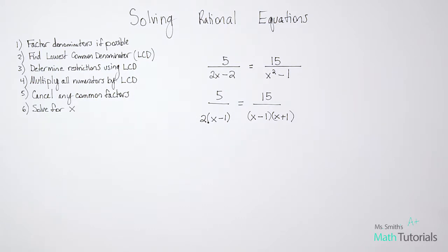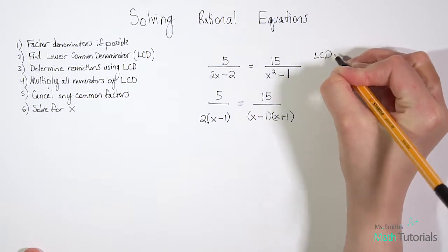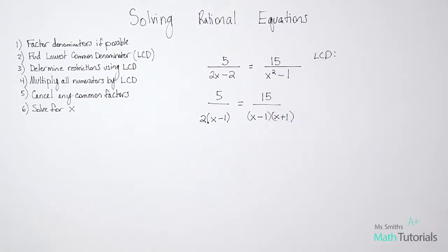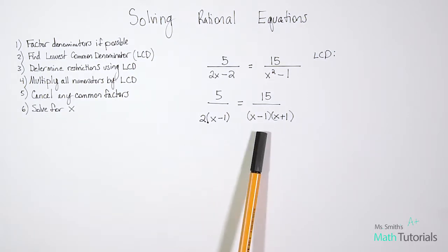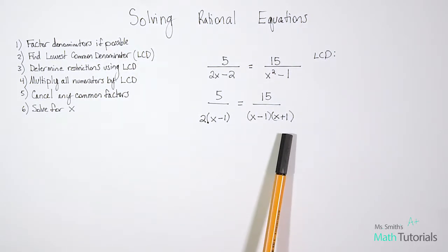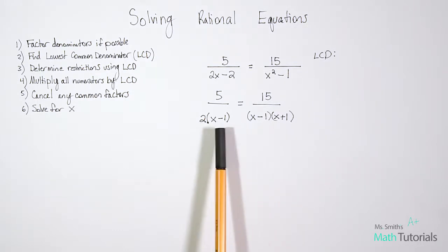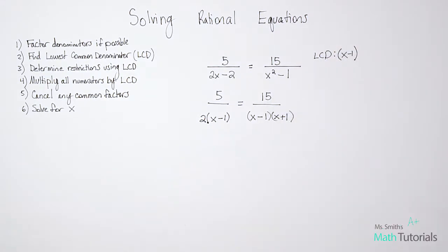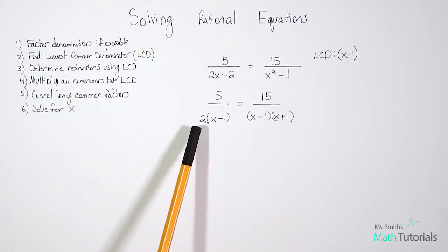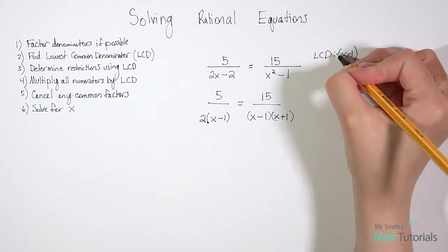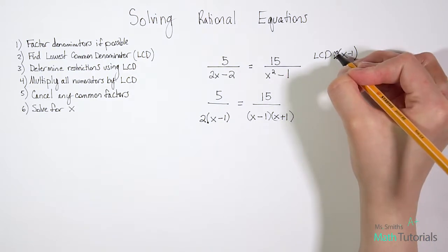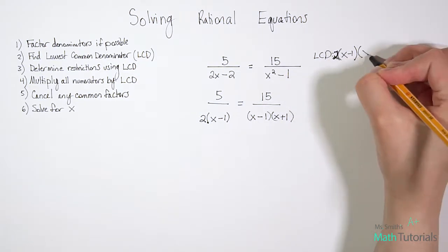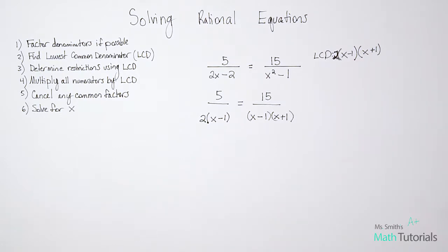Now that we've factored the denominators, we move to step two: find the LCD. To find the LCD we ask what do the denominators have in common and what do they have different. They have x minus 1 in common, and different they have x plus 1 and a 2. So our LCD is 2 times x minus 1 times x plus 1.